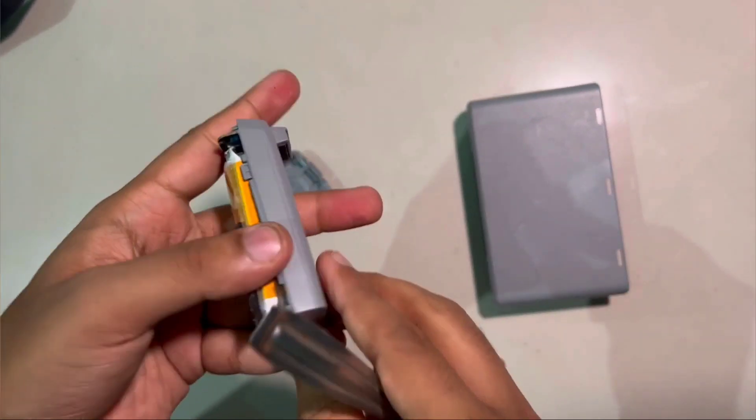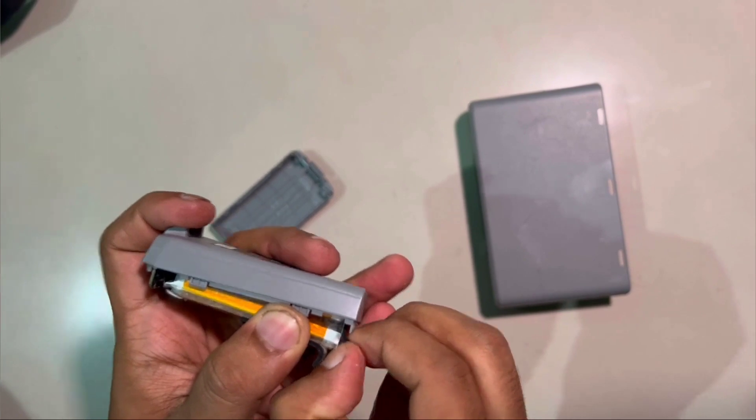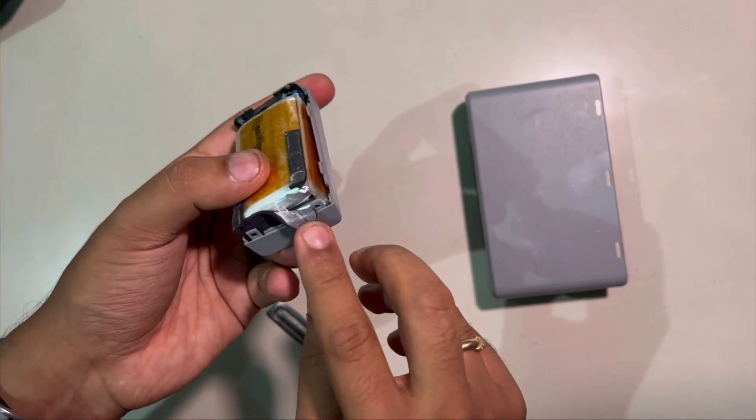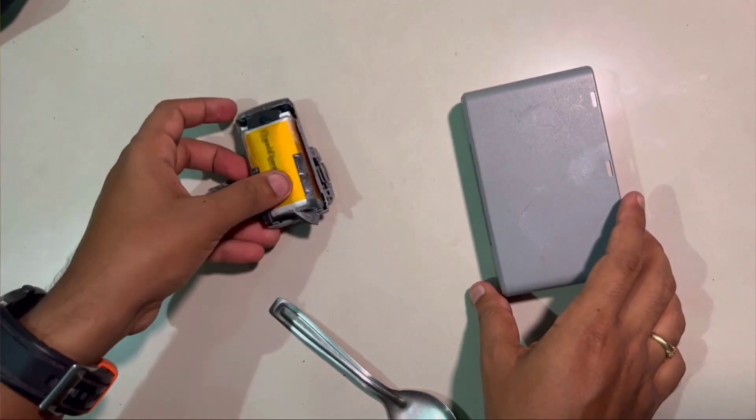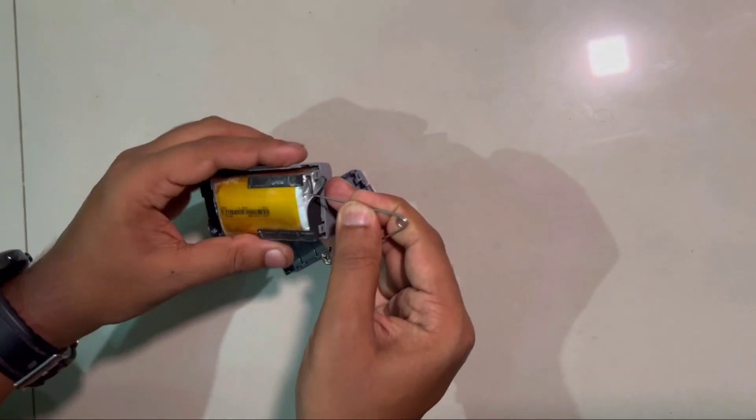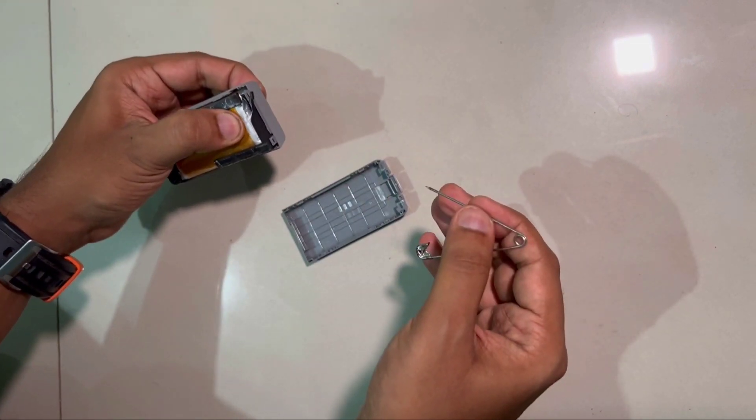Once you open the back panel, you can see two cells in the battery. Take off the tape at the bottom of one cell, then take a small pin and puncture one cell. Not both cells, just one cell.